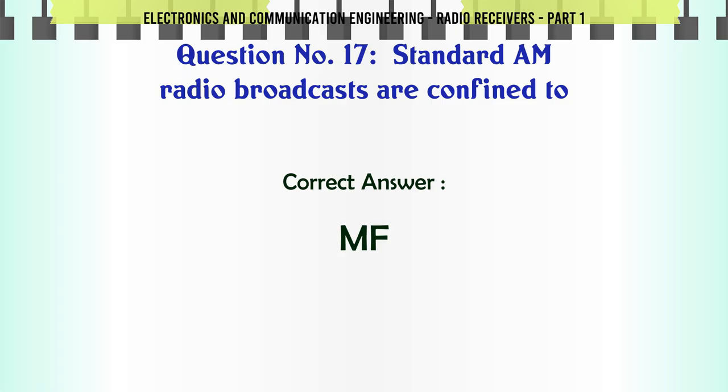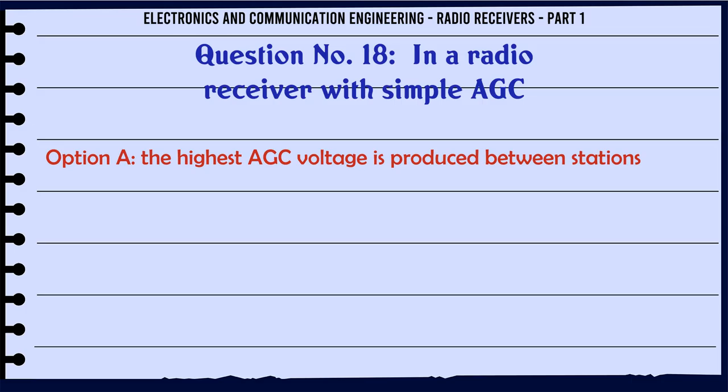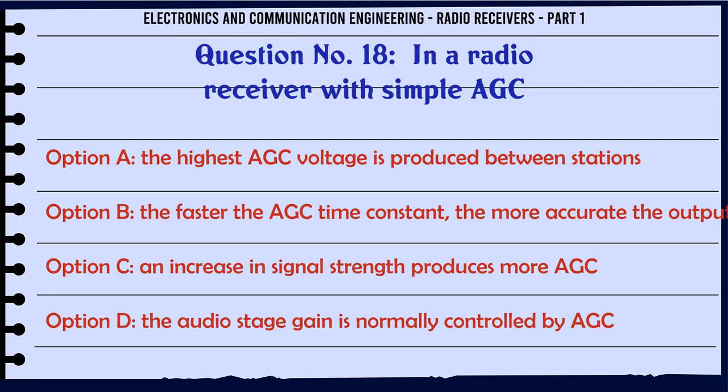Standard AM radio broadcasts are confined to: A. MF. B. HF. C. VHF. D. UHF. The correct answer is MF.